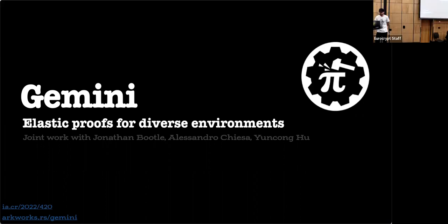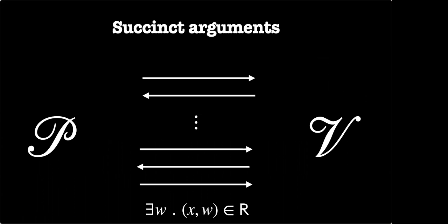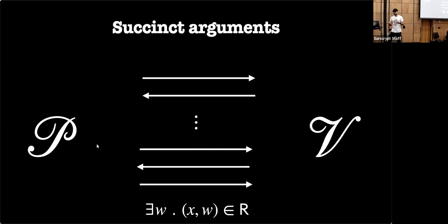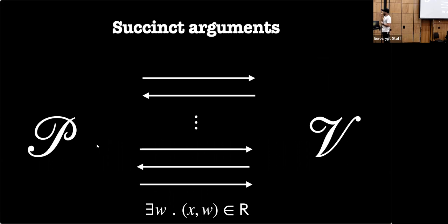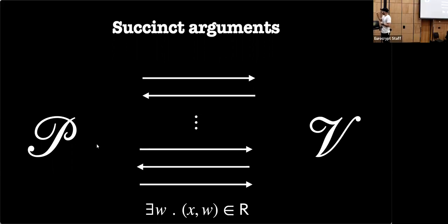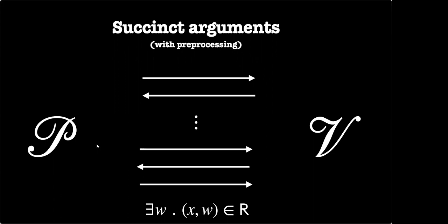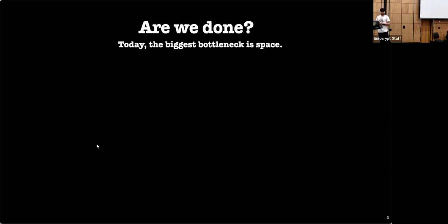This talk is about proving very large circuits — joint work with Jonathan Bootle, Alessandro Chiesa, and Yun-Song Hu. We focus on succinct arguments: a dialogue between a prover and verifier where the prover convinces the verifier that a witness satisfying some relation exists. Security relies on computational assumptions, and succinctness means verification complexity is less than the witness complexity. We focus on pre-processing succinct arguments where verification time is even lower than the statement size.